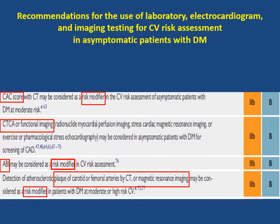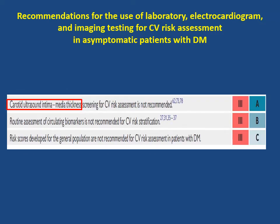What about screening of coronary artery disease in asymptomatic patients with diabetes mellitus? It is only a class 2b indication to ask for multi-slice CT coronary angiography or functional imaging such as myocardial perfusion imaging, stress cardiac MRI, or dobutamine echo to screen for coronary artery disease in patients with diabetes. The use of carotid intima-media thickness is not recommended by the latest guidelines.